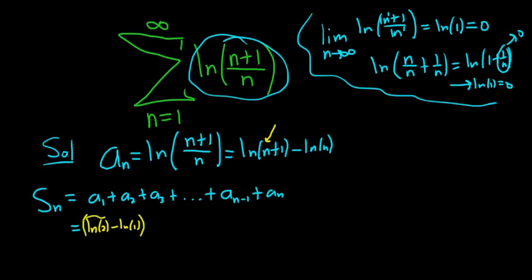Plus a sub 2, so 2 plus 1 is 3. So that's ln 3 minus ln 2. Right, because we're plugging in 2. So 2 plus 1 is 3, and then minus ln 2. Looks okay.